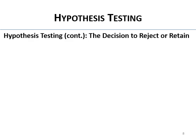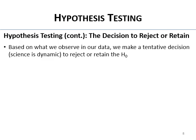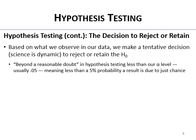The decision to reject or retain is based on what we observe in our data. We make a tentative decision — tentative because science is dynamic. We never prove anything; we only have the current state of what we believe to be true in terms of theories. We just make a decision about the null — we're not proving anything.